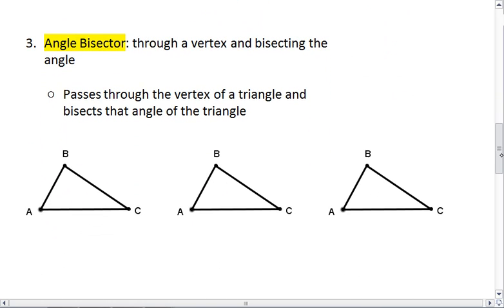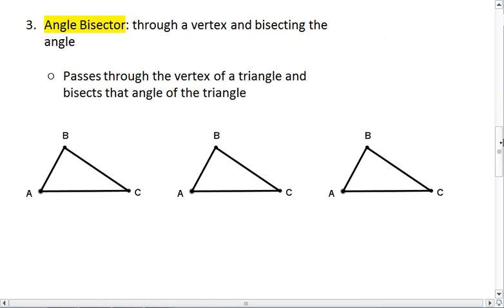Now let's talk about an angle bisector. An angle bisector passes through the vertex and bisects the angle. So it passes through the vertex of a triangle and bisects that angle of the triangle.